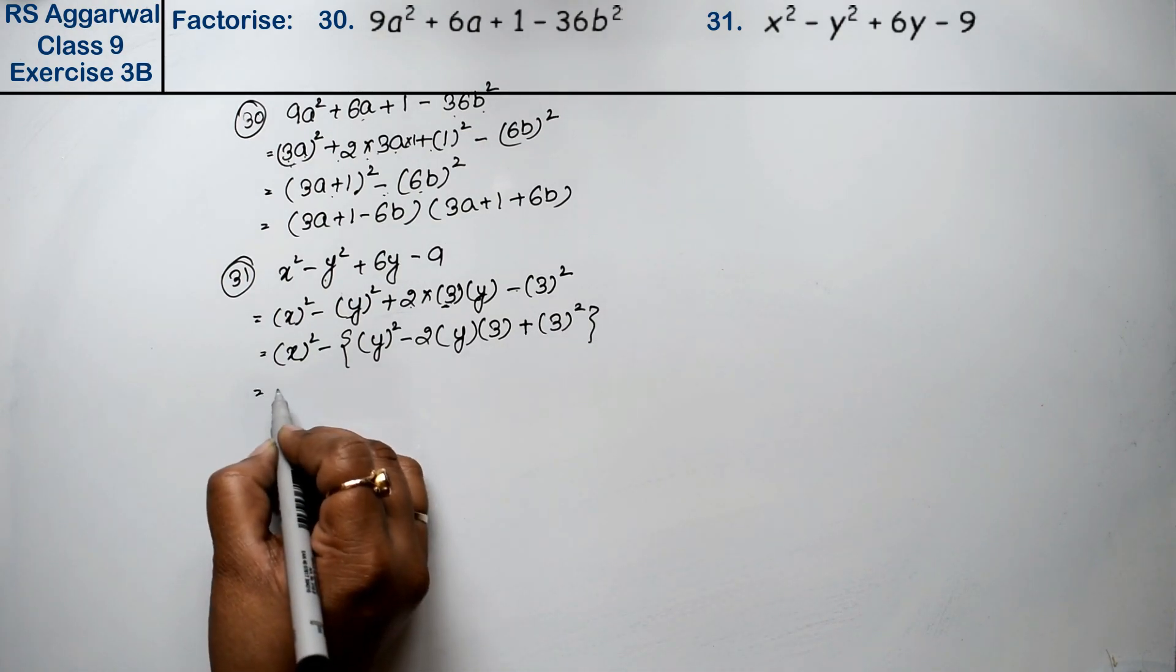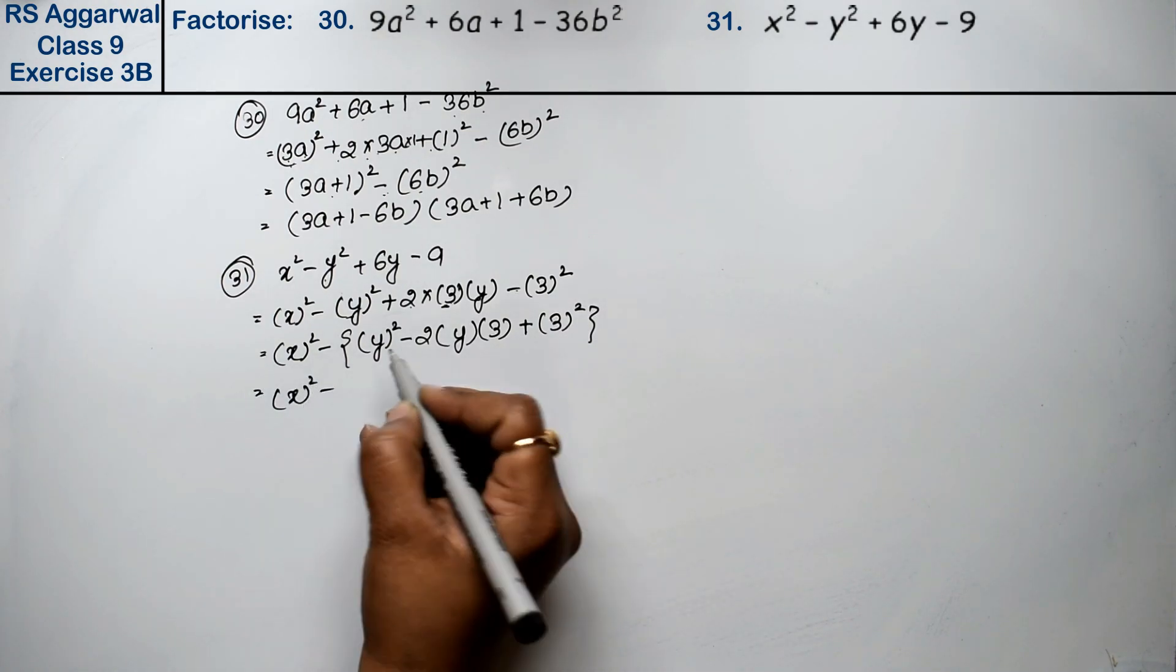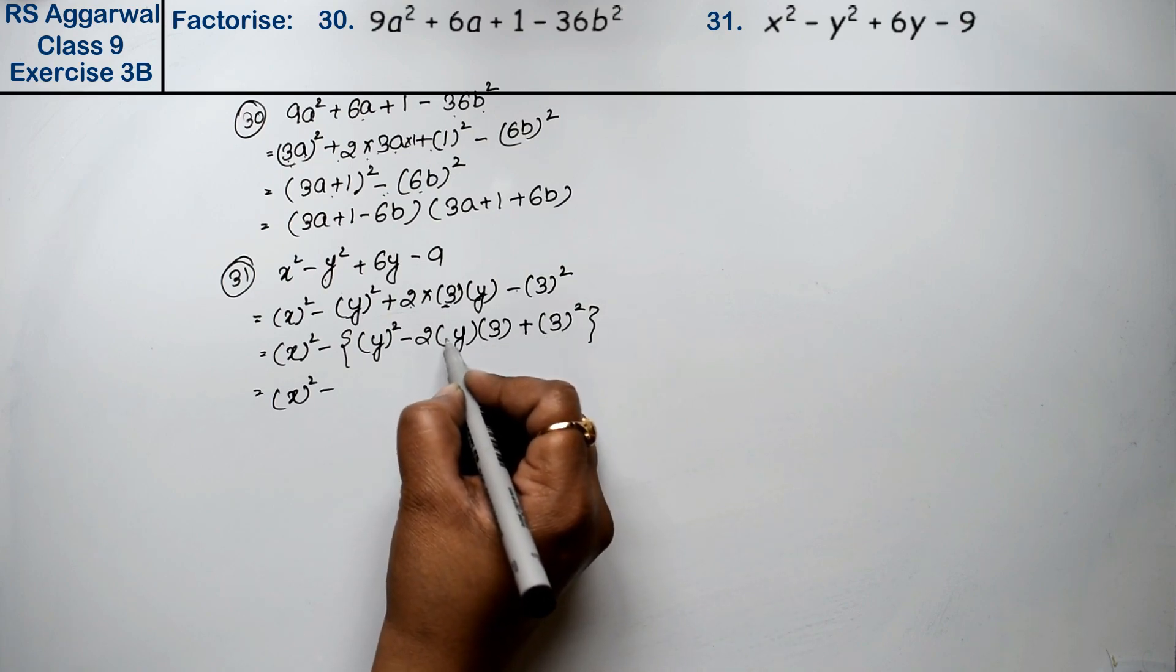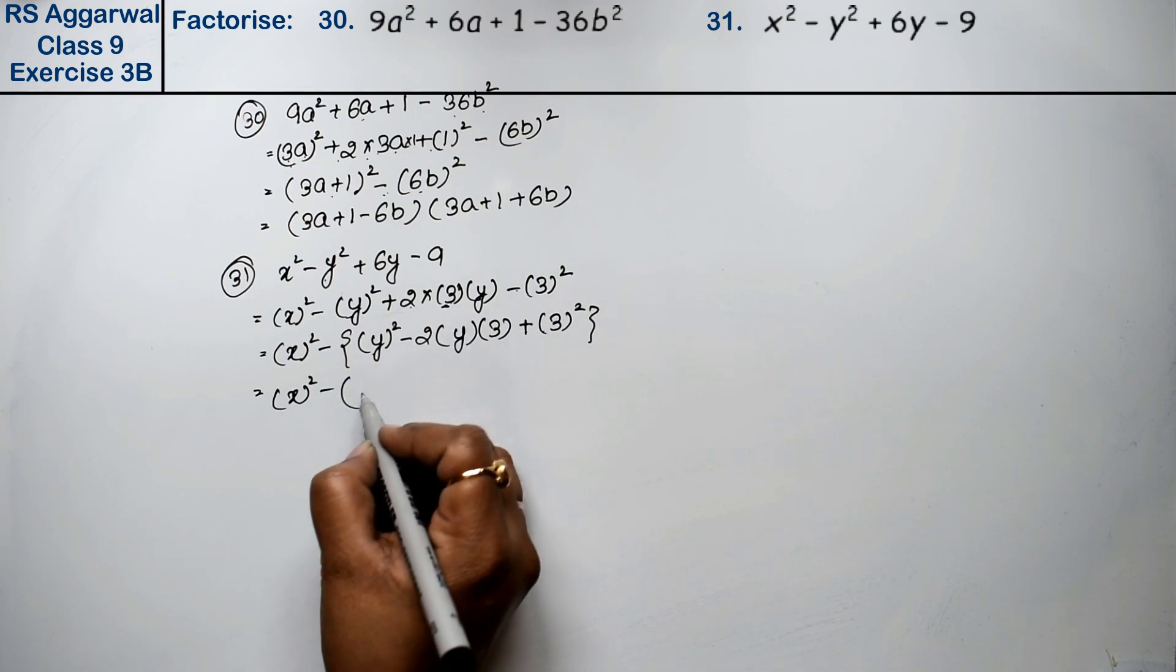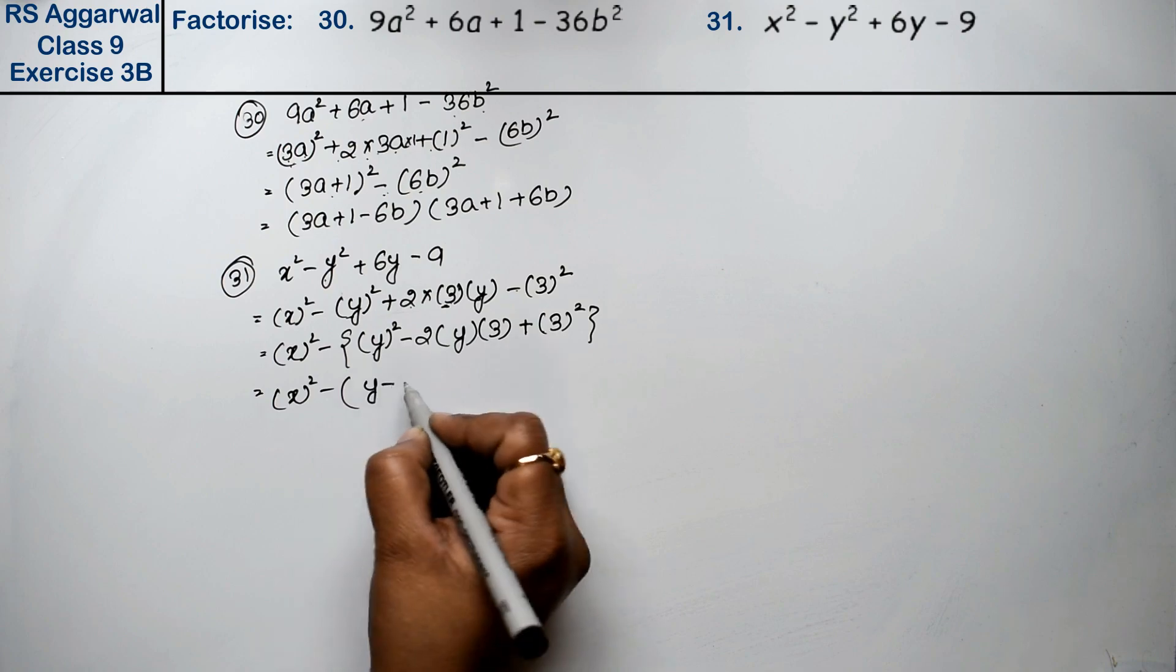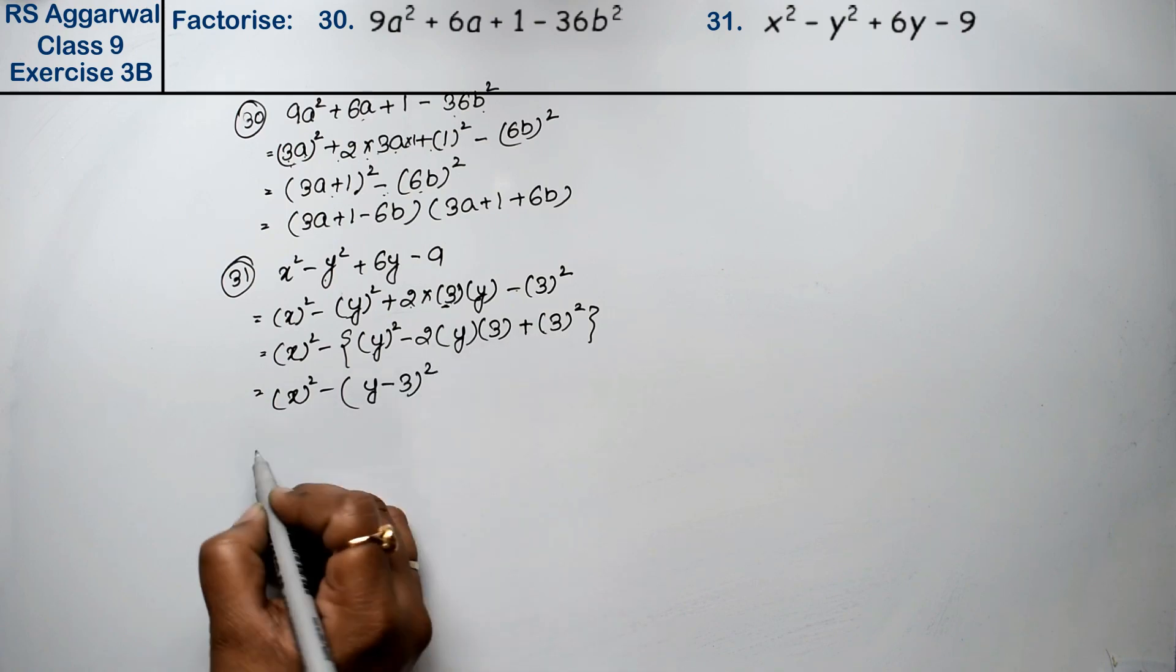So see, which formula did this become? a² + b² - 2ab. a is y, minus b whole square formula, right? Now the a² - b² formula...